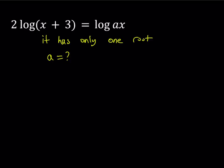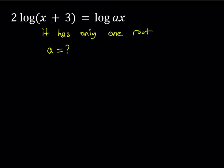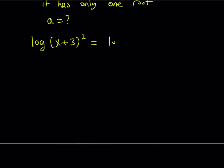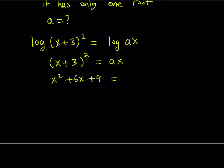First, note that x+3 must be greater than zero for the log to be defined. By the way, 'log' here means base 10; I'll write 'ln' if it's base e. Using the exponent rule, we rewrite 2·log(x+3) as log(x+3)², so the equation becomes log(x+3)² = log(ax). Since both sides have the same base, we can drop the logs: (x+3)² = ax, which expands to x² + 6x + 9 = ax.